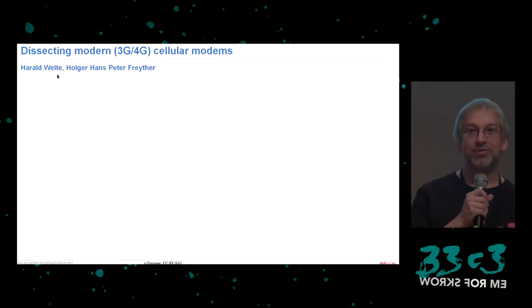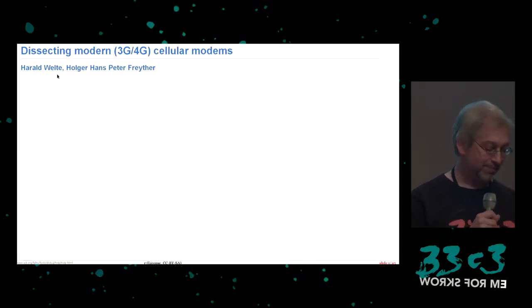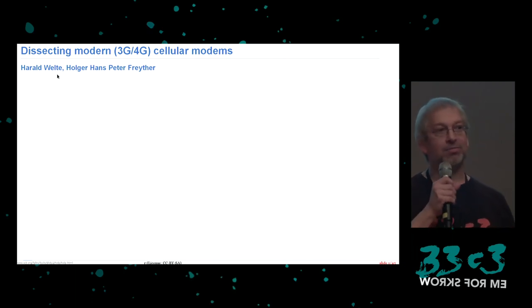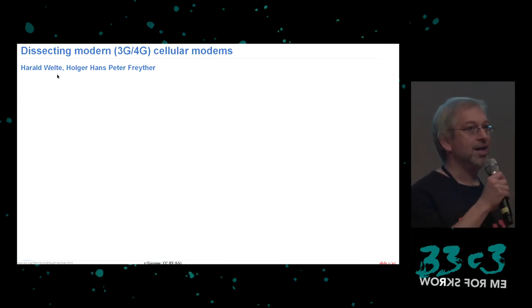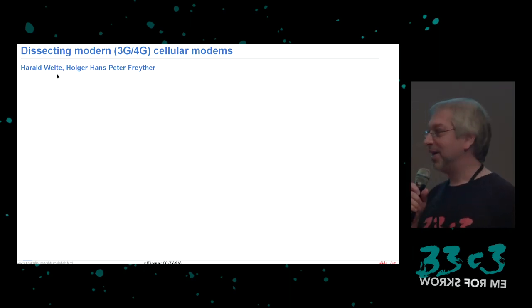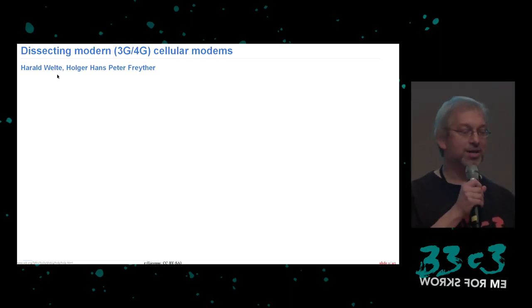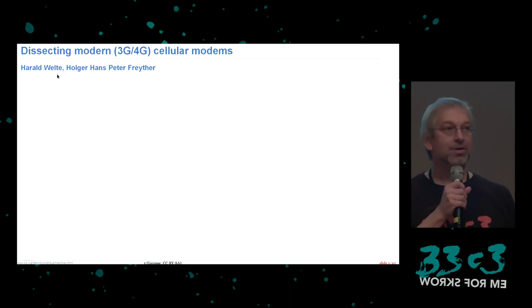The next talk is titled 'Dissecting Modern 3G/4G Cellular Modems' by Harald Welte and Holger Freyther. As we saw in the previous presentations on smart cities, there's a lot of IoT that just needs to communicate, and while there's Zigbee and LoRaWAN and other protocols, most likely they're going to fall back on what is tried and proven: the 3G/4G modems.